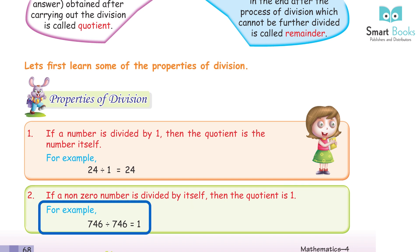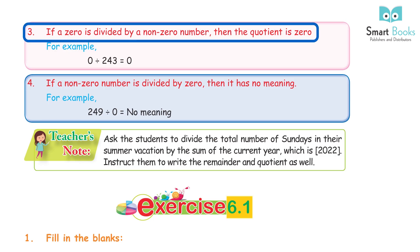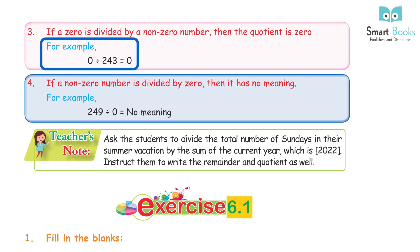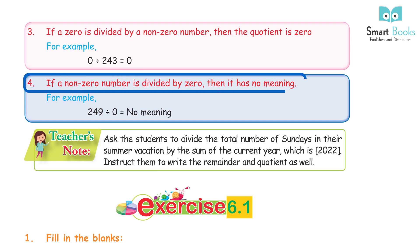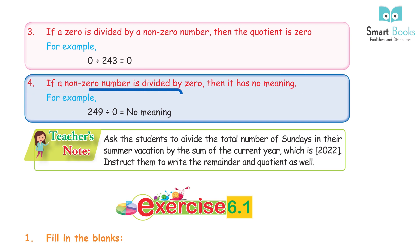Property 3 — if 0 is divided by a non-zero number, then the quotient is 0. For example, 0 divided by 249 equals 0. Property 4 — if a non-zero number is divided by 0, then it has no meaning. For example, 249 divided by 0 equals no meaning.